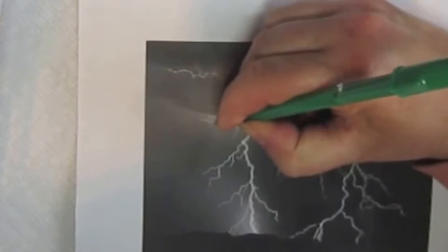Also this area here where it's light, I want to mask that too because I want to keep that white.